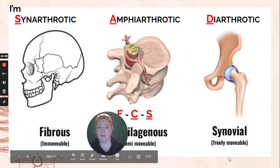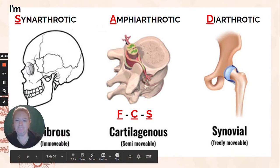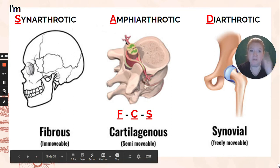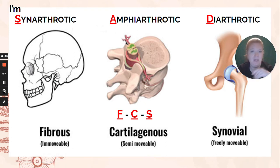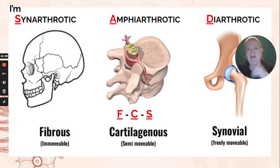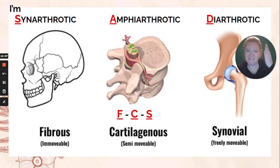A couple more reminders. Here's a little analogy to help you out. We have these big words: synarthrotic, amphiarthrotic, diarthrotic. We have fibrous, cartilaginous, synovial. Synarthrotic is always fibrous. Amphiarthrotic is always cartilaginous. Diarthrotic is always synovial. So how do you keep it straight? I came up with this little acronym — maybe it helps you: 'I'm sad.' Synarthrotic, amphiarthrotic, diarthrotic — fibrous, cartilaginous, synovial.